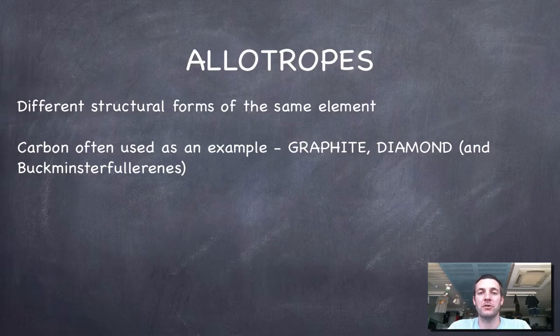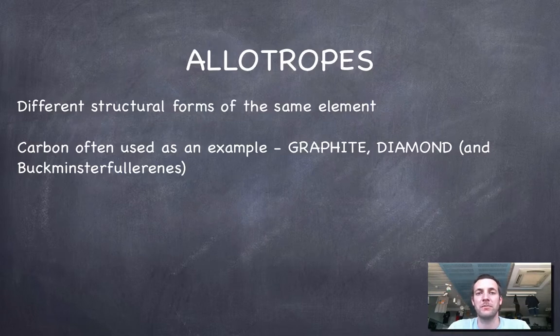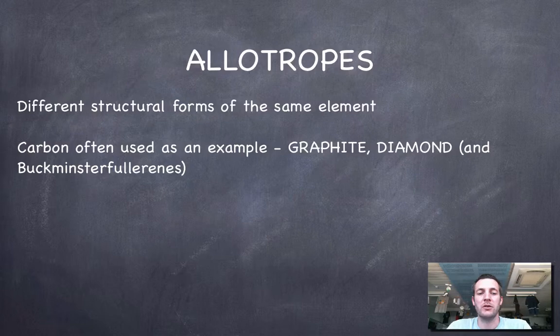Carbon is by far the most commonly used example of allotropy in chemistry, but there are other elements that exist as allotropes. Oxygen is one for example - it's got oxygen and it's got ozone. They're different structural forms of the element. We're going to stick with the examples from carbon.